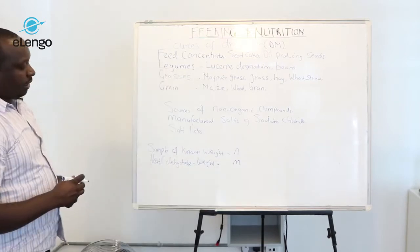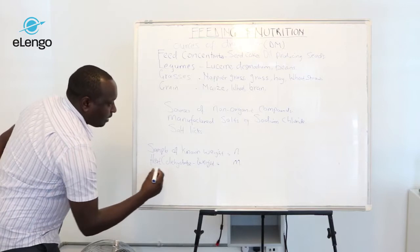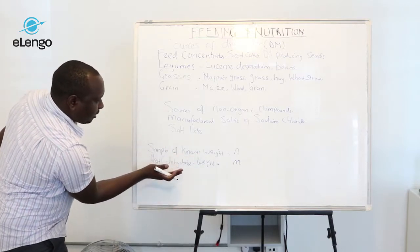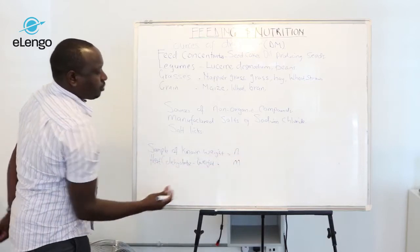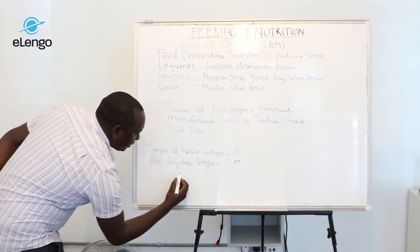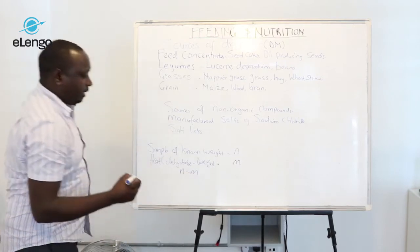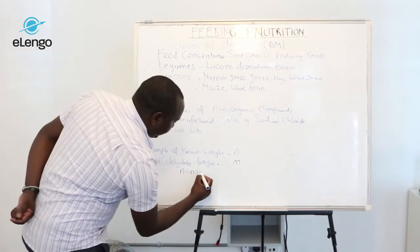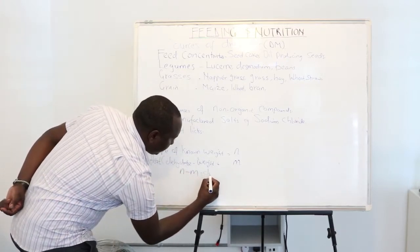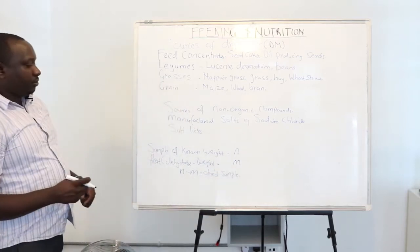Call this weight M. Now the remainder—you subtract from the initial weight. Of course, this will be less because we have removed the water. You have a weight which is N minus M, and this is the weight of the dried sample.